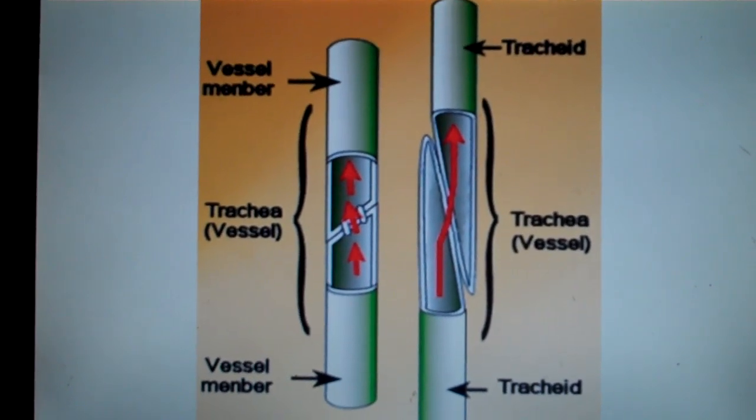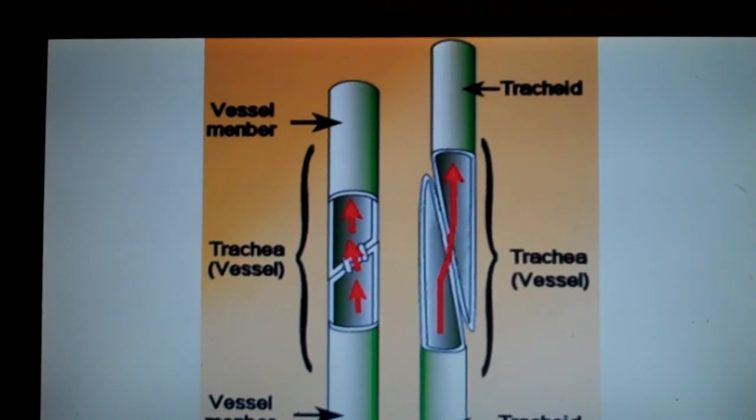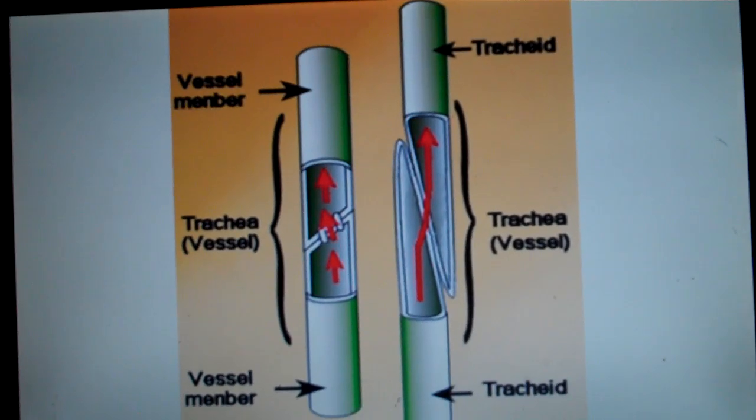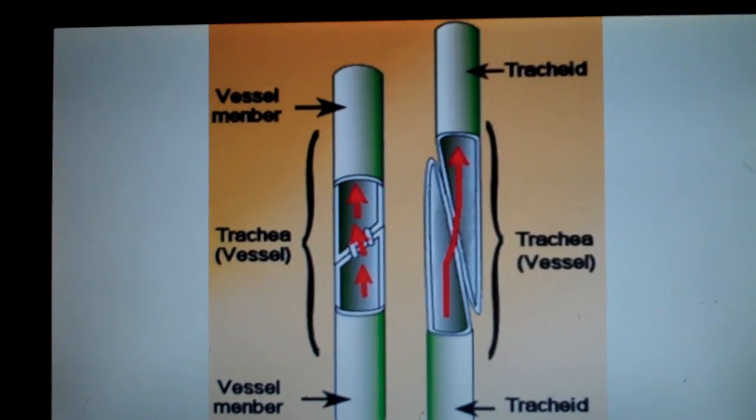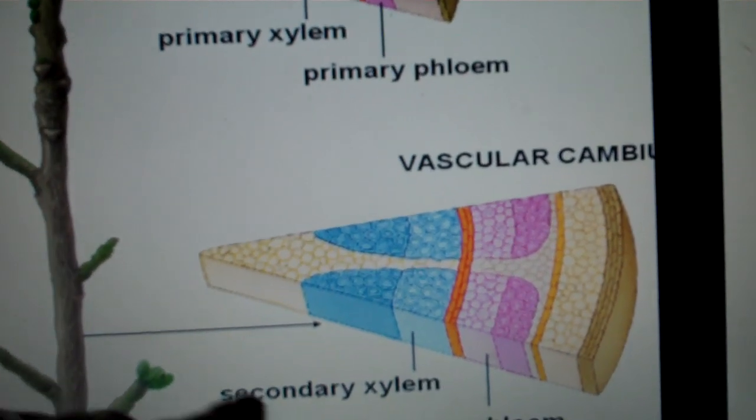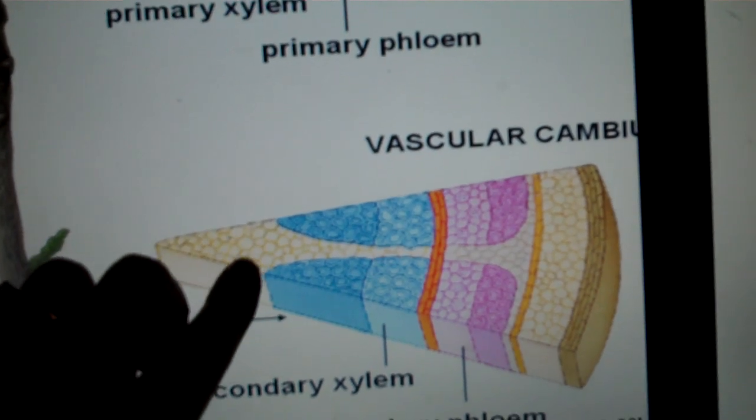These are dead at maturity, and their cell walls are lignified, which means they're rigid and firm. Because of this, the xylem gives the plant or tree its hardness and strength.